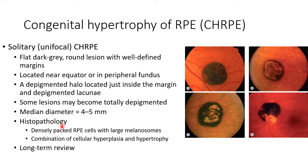The median diameter of a solitary CHRPE is 4-5 mm. Histopathology shows densely packed RPE cells with large melanosomes, with a combination of cellular hyperplasia and hypertrophy. Management of solitary CHRPE is with long term review.